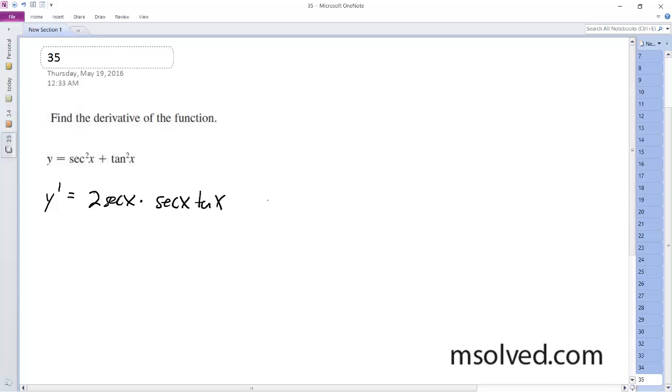and then derivative of the tangent squared is going to be plus 2 tangent x, and then the derivative of tangent is secant squared x. Okay, and then simplifying this,